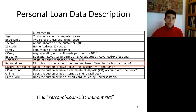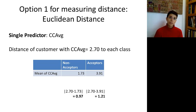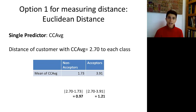The outcome variable is whether the customer accepted or rejected the offer. Let's start with Euclidean distance, and the simplest case where we have only a single predictor. Suppose we're looking at CC average, which is the credit card average spending. Suppose that we have a customer with a CC average value of 2.70.